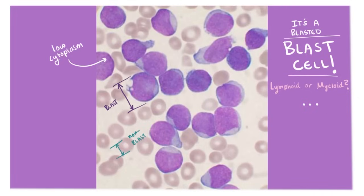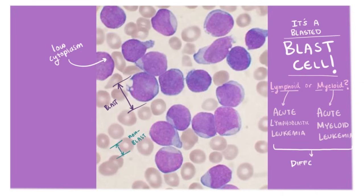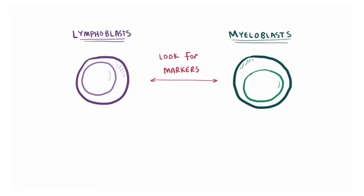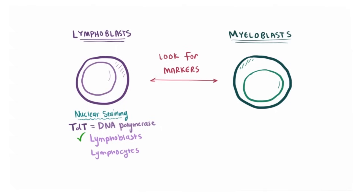That's tough to say, but it's important, because if they have a buildup of myeloblasts they'll have acute myeloid leukemia, whereas a buildup of lymphoblasts means acute lymphoblastic leukemia — and these two are very different and need very different treatments. So we look for certain markers. For lymphoblasts, the most important marker is a positive nuclear staining for TDT in the cell's nucleus. TDT is a DNA polymerase present only in the nucleus of lymphoblasts, not in mature lymphocytes, and not in myeloblasts.